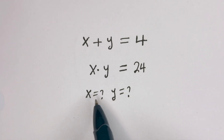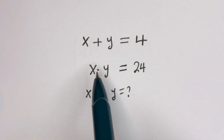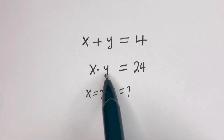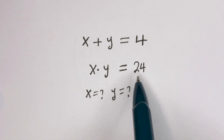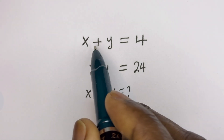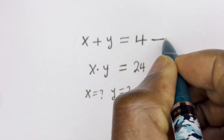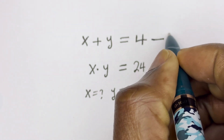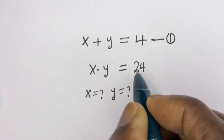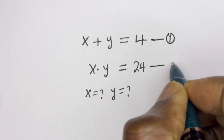Hello. How to solve for x and y in this equation: x plus y is equal to 4, and s multiplied by y is equal to 24. From here, s plus y is equal to 4 — let's call this equation 1. s multiplied by y is equal to 24 — let's call this equation 2.